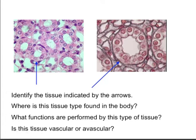Where is this type of tissue found in the body? This happens to be a slide taken from kidney tubules. Kidney tubules are part of the blood cleansing apparatus of the urinary system, attempting to separate beneficial components of blood plasma from waste products. The waste products eventually find their way into the filtrate, which becomes urine. This is a type of tissue that's very good at secretion and absorption.